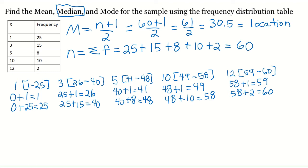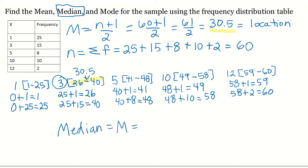Now I have the position spread for each of those values. I'm looking for the location 30.5. Looking through each range, I can see that 30.5 falls between 26 and 40 — that's the range for the data value 3. So the median m is going to equal 3 for this frequency distribution sample.